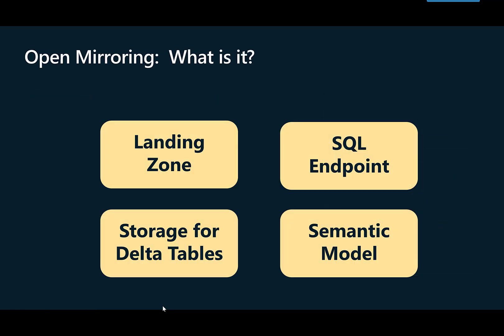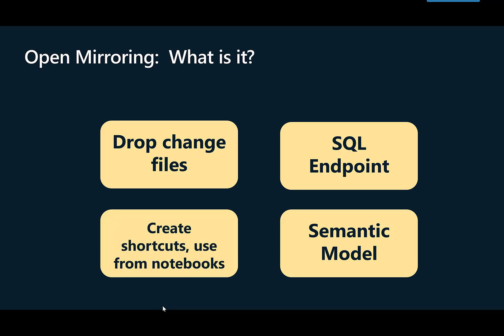After you create a mirror database, you get a landing zone and that is where you drop your change files. Those are in a very specific format and we'll go into that in another video. The mirroring will actually create Delta tables from those files, and from those Delta tables you can then create shortcuts from other lakehouses and shortcut to them.